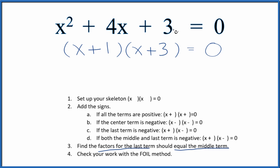Let's check our work with the FOIL method. We multiply the first terms, x times x is x². Outside, x times 3. Inside, 1 times x. Then the last terms, plus 3. All that equals 0. We combine these and we have x² + 4x + 3 = 0. That's what we started with, so we factored this equation correctly.